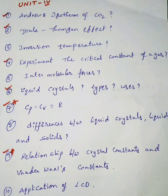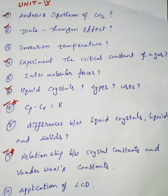Crystal defects is a very big topic. Coming to unit four, we have 10 questions, mainly six of which are very repeatedly and frequently asked. These include: Mayer and Rose isotherm, Joule-Thomson effect, critical constants of gas, liquid crystals and their types and uses, Cp minus Cv equals R, and the relationship between crystal constants and van der Waals constants.